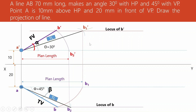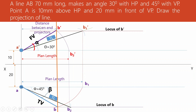One important tip: points b and b' always lie on the same vertical line, so once you plot b' you can easily plot b using the locus of b. Also, the horizontal distance between A' and B' and between a and b is called the distance between end projectors — this condition is sometimes given in exam problems.